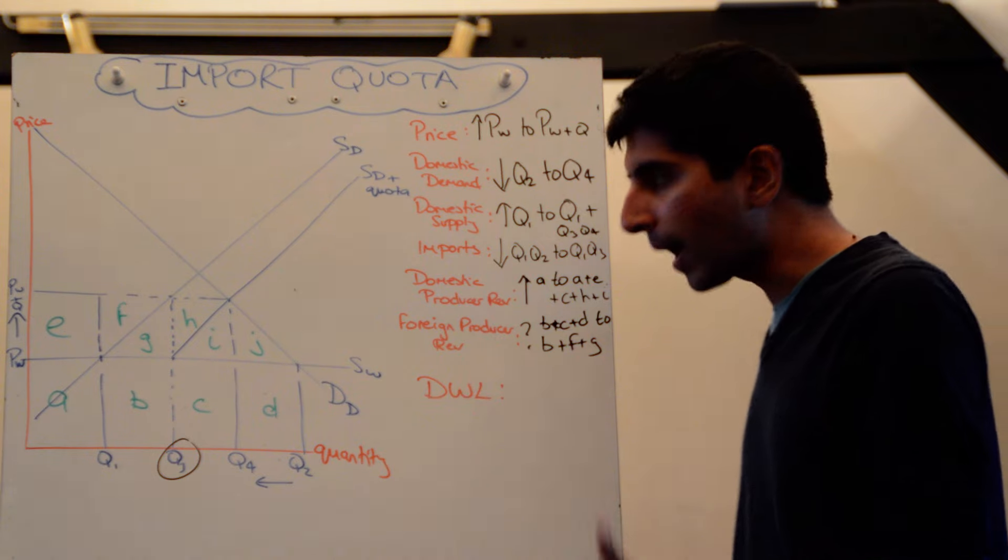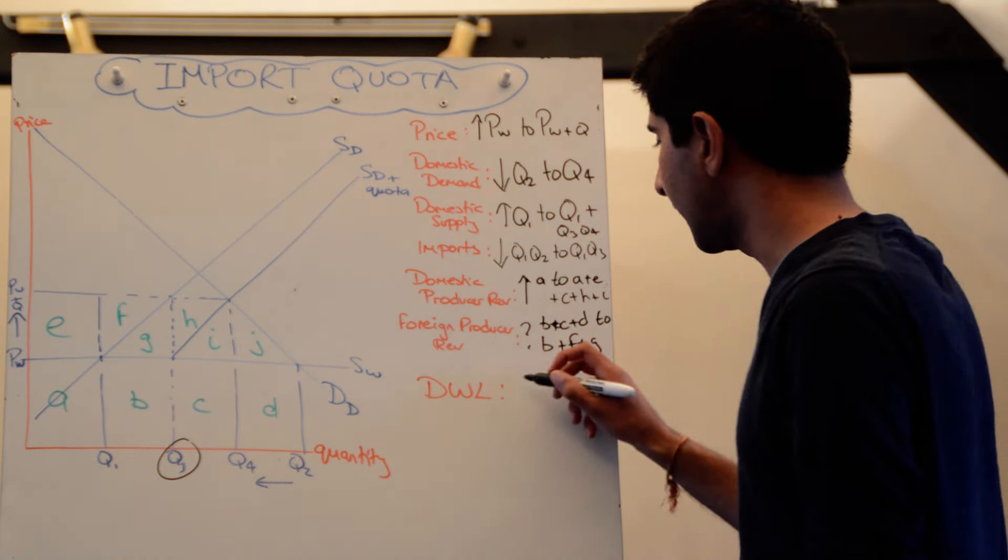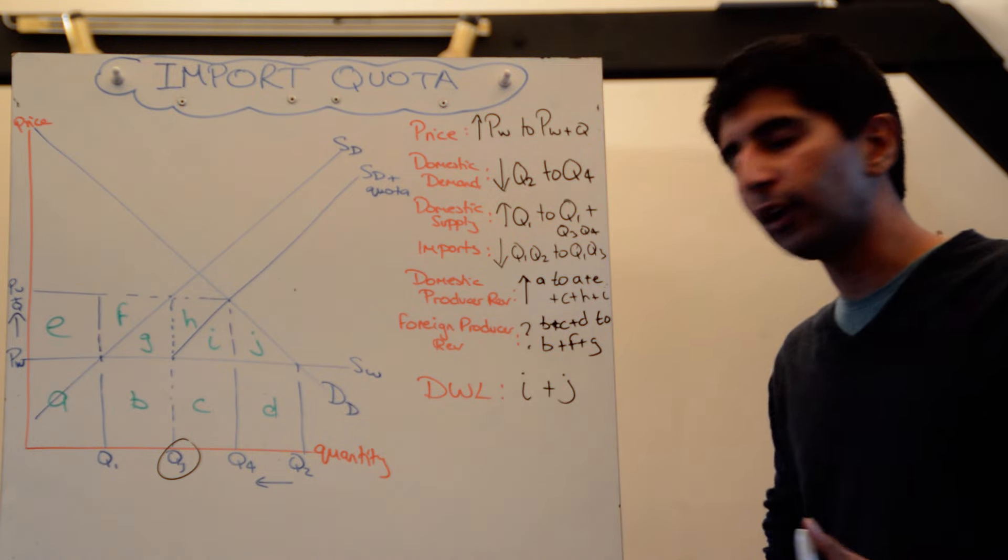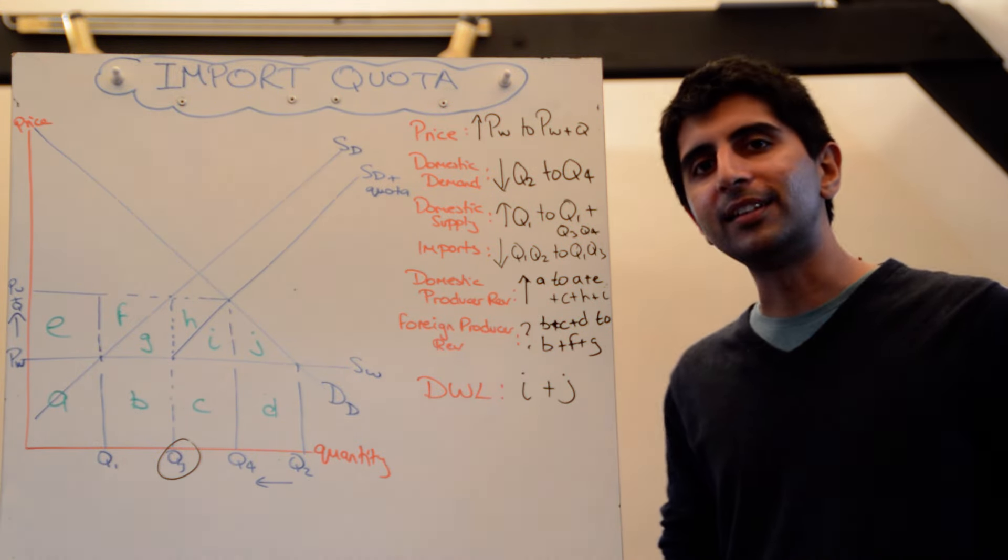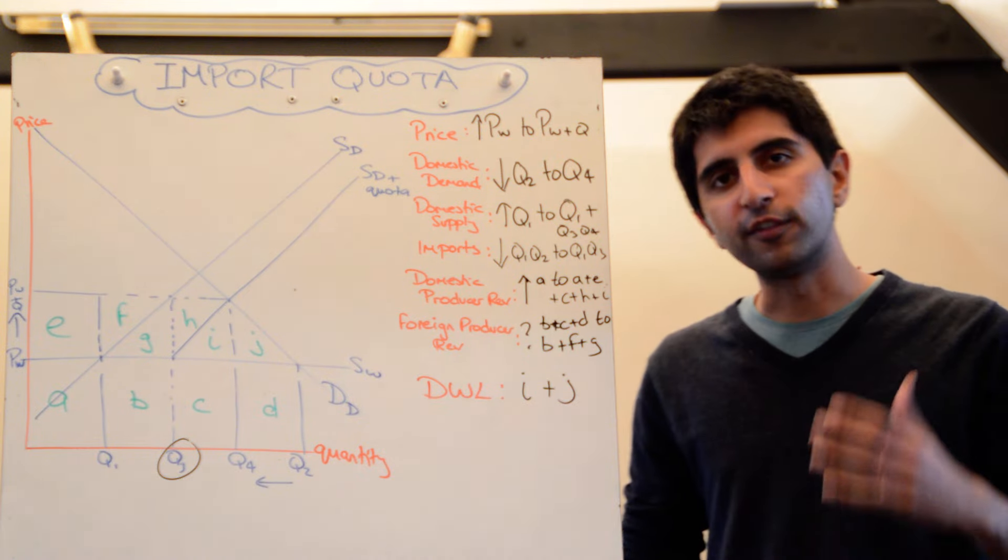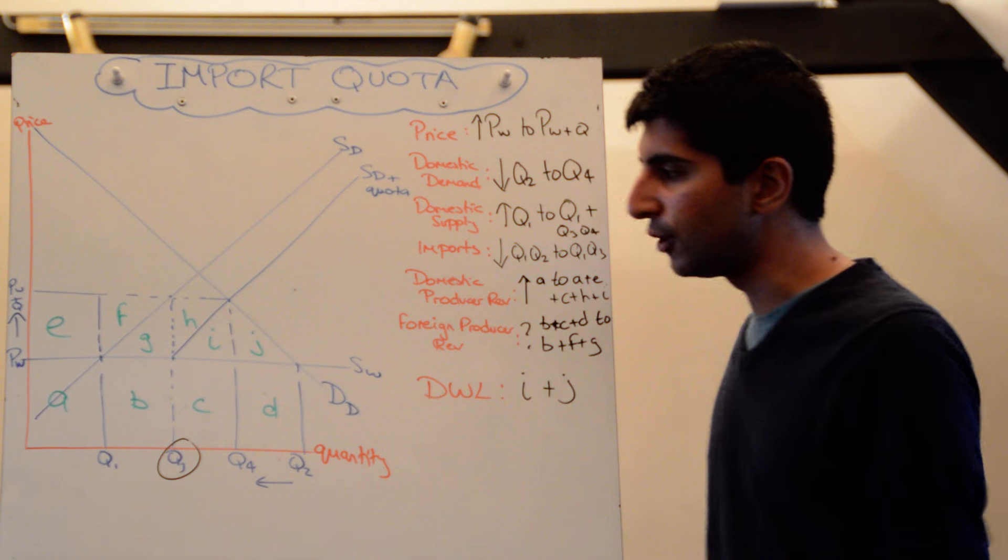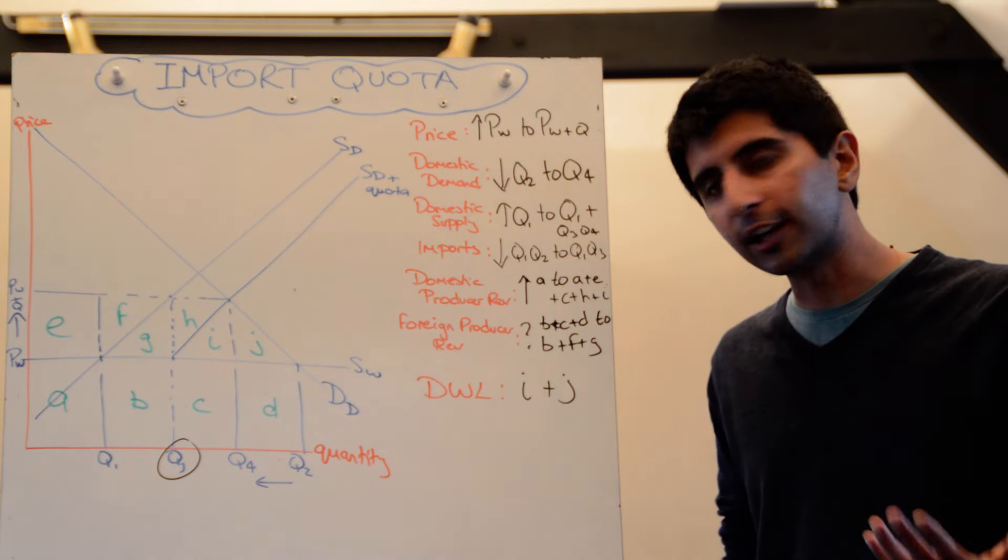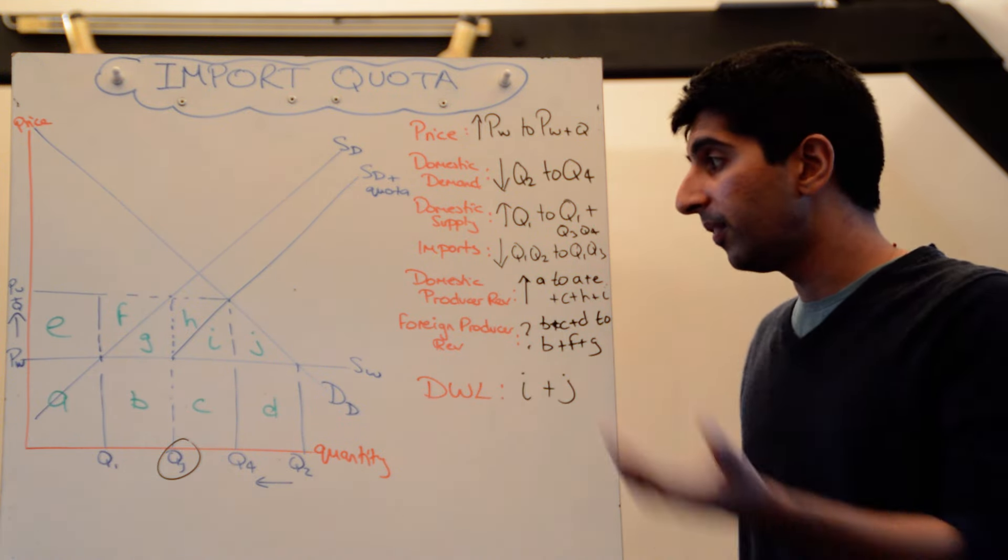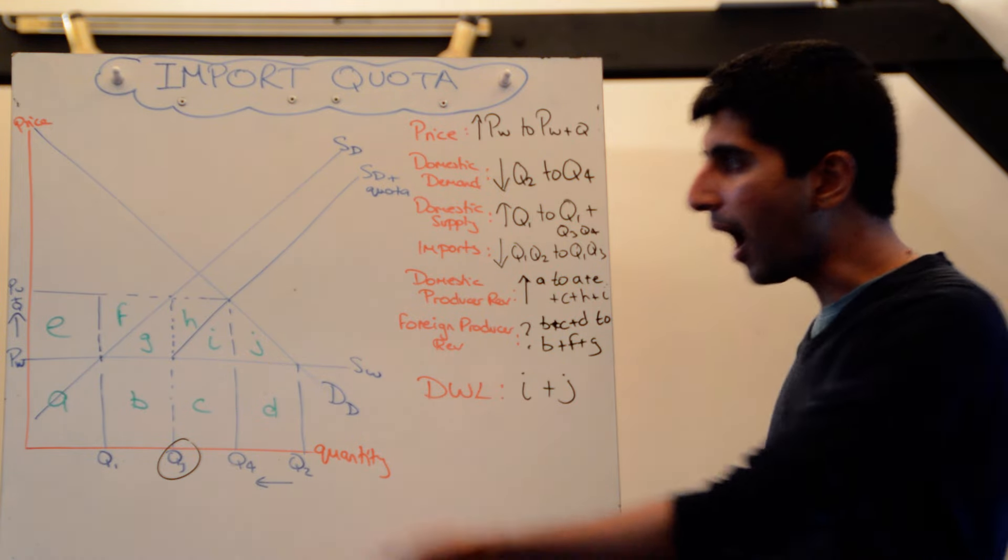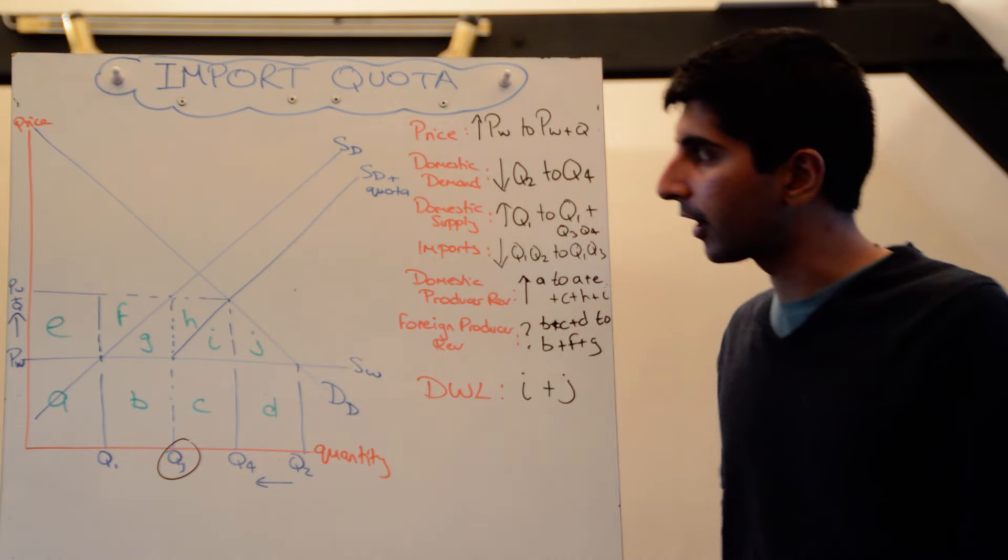And in my last video, I talked about the deadweight losses. The deadweight losses are I and J. While J is a deadweight welfare loss of consumer surplus, I is a deadweight welfare loss in terms of a loss of world efficiency. Because domestic suppliers are producing units that they shouldn't be at a higher cost or they're less efficient. They don't have the comparative advantage. They're still supplying those units because of the artificial increase in price that comes from this quota.